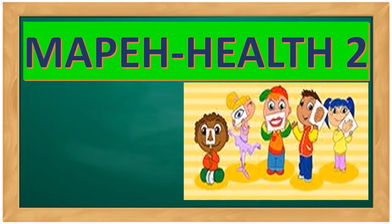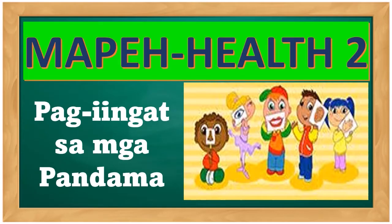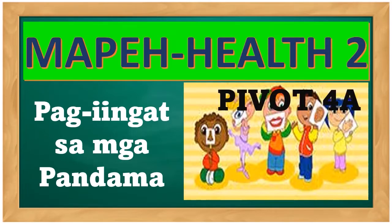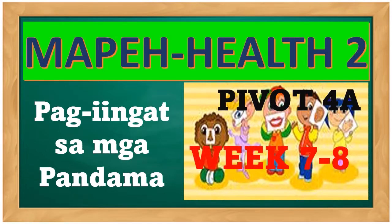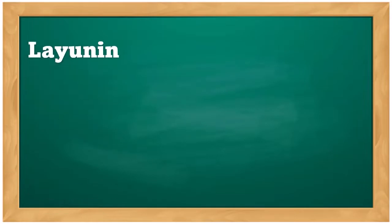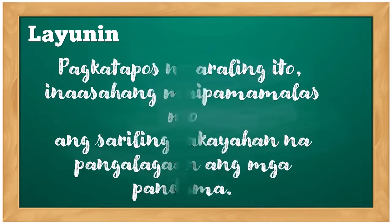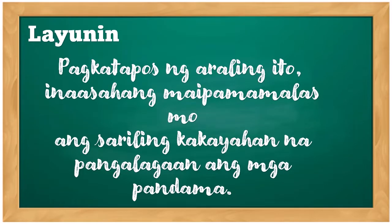Ang ating subject ay MAPI Health 2. Ang ating pag-aaralan ay kung paano ang pag-iingat sa mga pandama. Ito ay mula sa pivot 5.4e ng grade 2, week 7 to 8. Ang layunin sa araling ito ay pagkatapos ng araling ito, inaasahang maipamamalas mo ang sariling kakayahan na pangalagaan ang mga pandama.